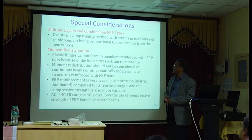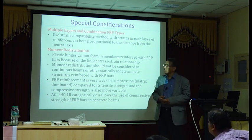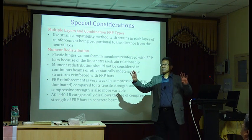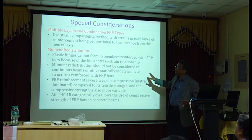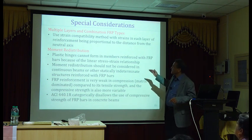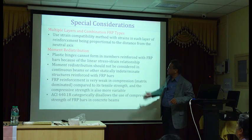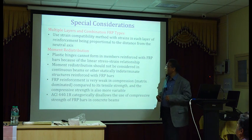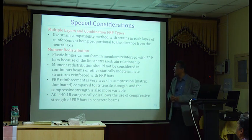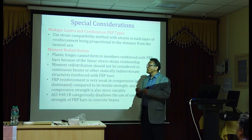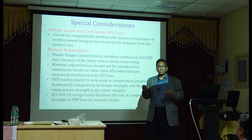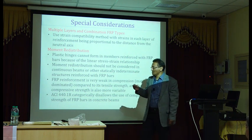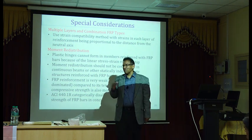Hinges cannot be formed, therefore we cannot use redistribution of moment in continuous beams, multiple span continuous beams. So you should not try to use or apply moment redistribution to continuous beams or other statically indeterminate structures reinforced with FRP. And it doesn't mean you cannot use FRP strength in compression in any way or form in your design. You cannot do that.